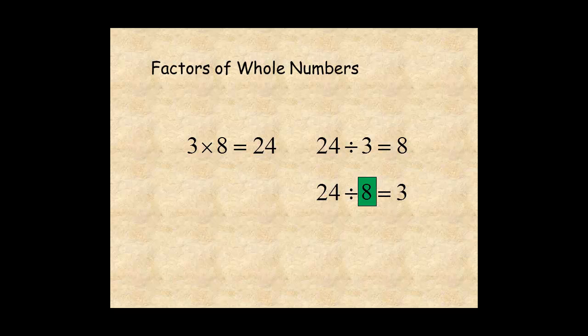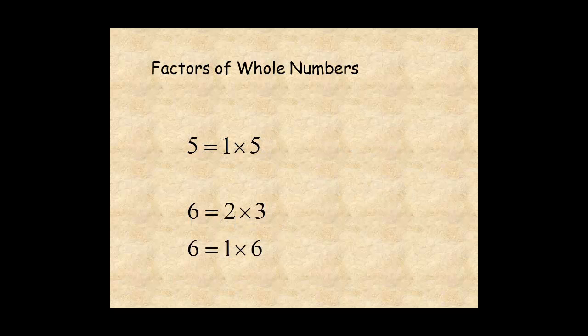Also notice that every number has 1 and itself as factors. A whole number with only 1 and itself as factors is a prime number. Whole numbers with more than 2 factors are composite numbers.